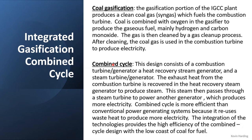In the gasification step, coal is combined with oxygen — either pure oxygen, air, or oxygen-enriched air, though oxygen is preferred — in a gasifier that produces hydrogen and carbon monoxide as a gaseous fuel mixture. The coal will also produce byproducts such as tars. The desired hydrogen and carbon monoxide mixture is then cleaned by a gas cleanup process that removes nitrous oxide, sulfur, and other unwanted components.